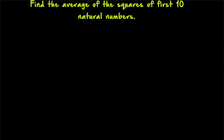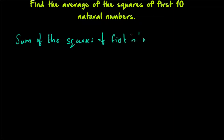Question number 2: find the average of the squares of the first 10 natural numbers. Here also, we can first derive a general formula. The average for the first n integers is given as (n+1)/2 as we saw in the previous question. Now we are going to find out the average for the squares of the first n integers.